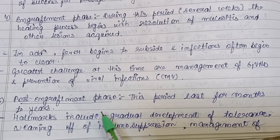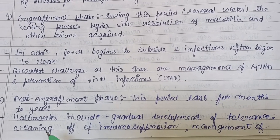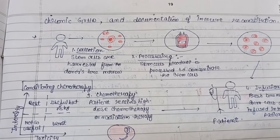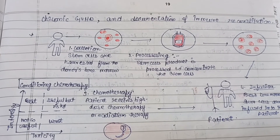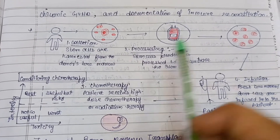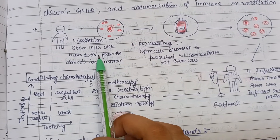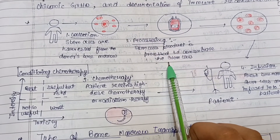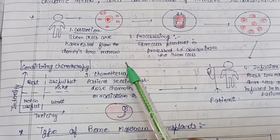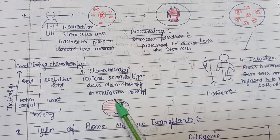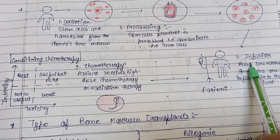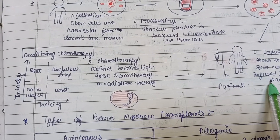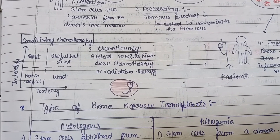The last is the post-engraftment phase, which lasts for months to years. Hallmarks include gradual development of tolerance, weaning off of immune suppression, management of chronic GVHD, and documentation of immune reconstitution. A diagram shows the full process: stem cell collection from the donor, processing to concentrate stem cells, high-dose chemotherapy or radiation for the patient, and finally infusion of fresh bone marrow or stem cells.